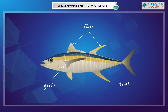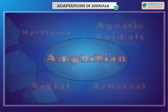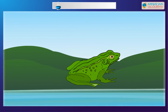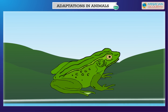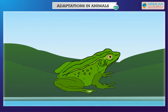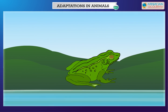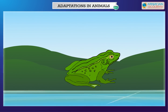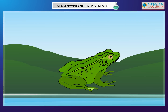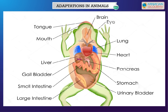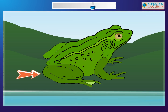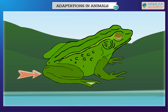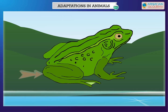Amphibians. Animals that can live both on land and in water are called amphibians. Frogs and toads are amphibians. They begin their life in water and spend most of their life on land. The following adaptations are present in frogs: when on land, frogs breathe with the help of their lungs, while in water they breathe through their moist skin. The back legs of a frog are long and strong, which help the frog to hop on land.